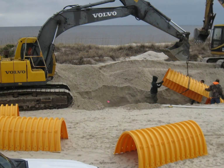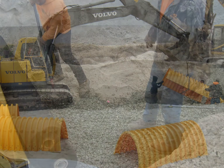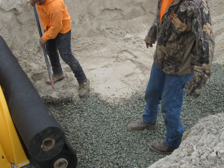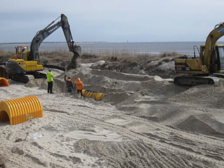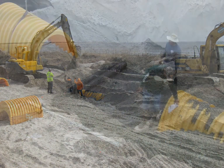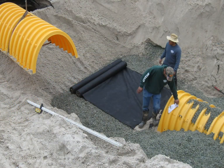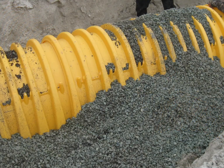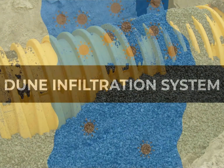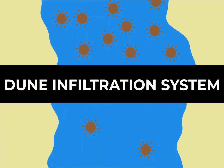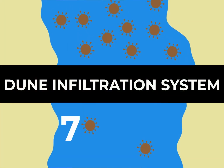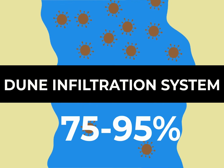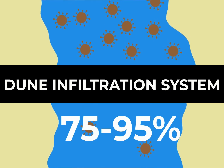Beach sand has a significantly high infiltration rate, so it can filter a large amount of runoff if the sand is above the groundwater. Studies have shown that these systems remove between 75% to 95% of pollutants.